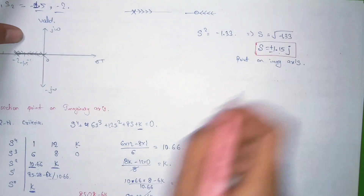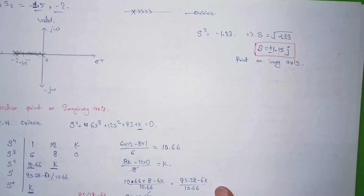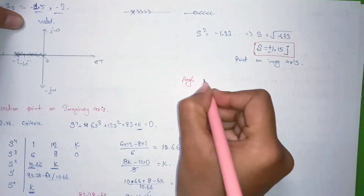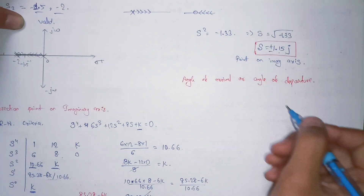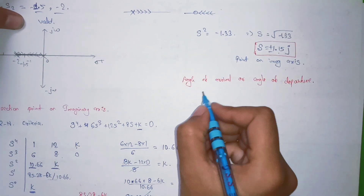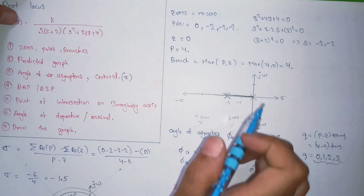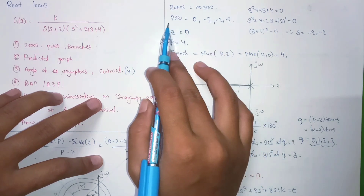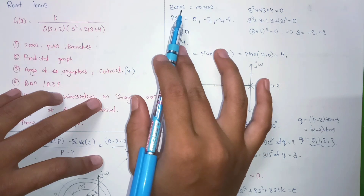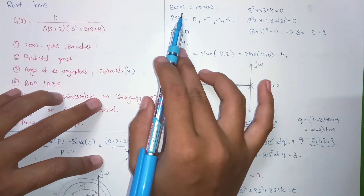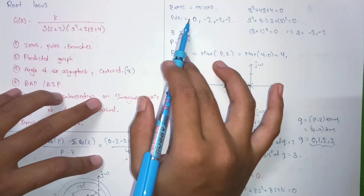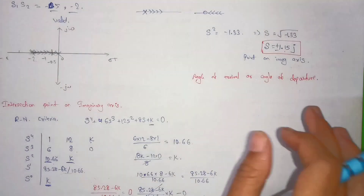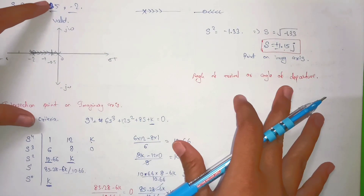So the point of intersection on the imaginary axis is at s = ±1.15j, and this occurs at K = 14.21. The next step was to calculate the angle of departure or arrival. If any pole has an imaginary part, the system has an angle of departure; if any zero has an imaginary part, there is an angle of arrival. In this case none of the poles or zeros have imaginary parts, so there is no angle of departure or arrival. We will skip this step and draw the final graph.